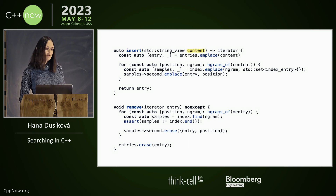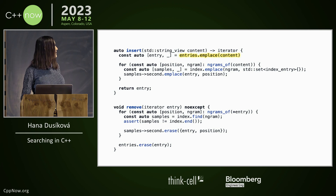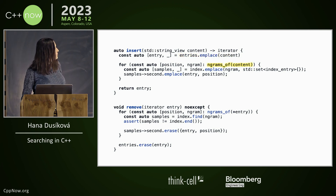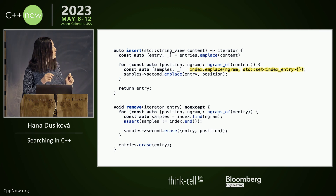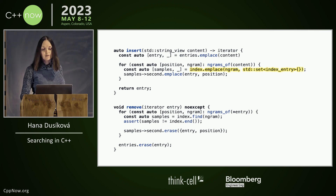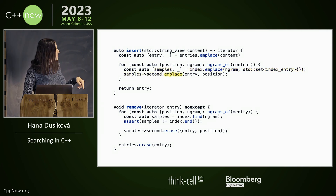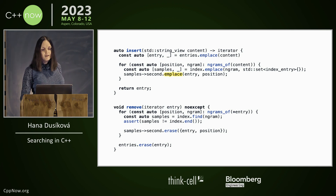Insert is just easy. You will take string_view and place it into entries — it will always succeed. Then you will look at the ngrams, iterate through them. And for each ngram in the index, you will create a new set. If there is not any, if there is already something, it will give you an iterator to it. And then you will emplace into it the iterator of the string and the position where the ngram in the string is.